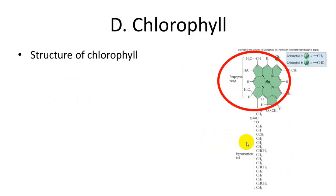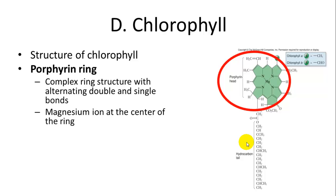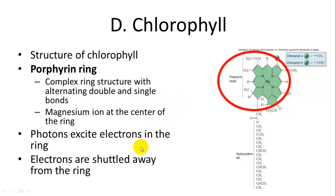The structure of chlorophyll relates to its function. It has a porphyrin ring — a complex ring structure with a magnesium atom in the middle surrounded by alternating double and single bonds. This is where electron excitation occurs and electrons are shuttled to an electron acceptor. The hydrocarbon tail makes chlorophyll able to embed within the lipid membrane due to its hydrophobic nature.